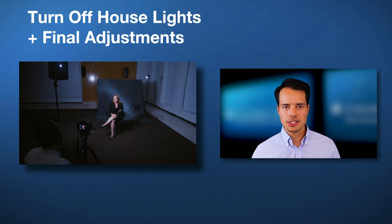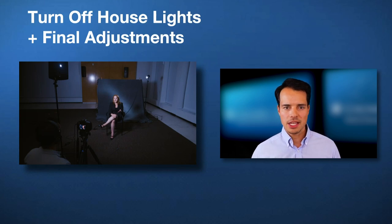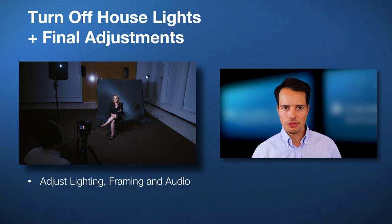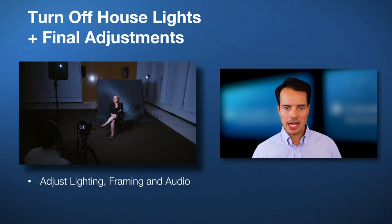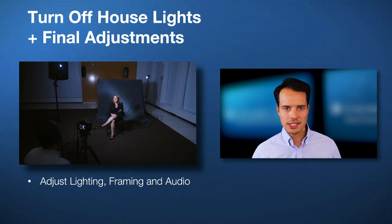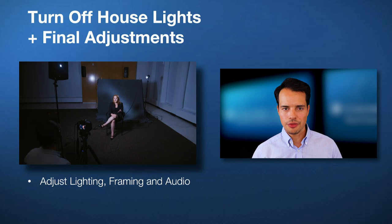Once our lights are in place, we're going to turn off the house lights overhead and make any final adjustments. We're looking at our three lights: our key light, our backlight, and our background light. If we need to increase the intensity at all, we might do that. We're also going to be checking our framing of our interview subject.